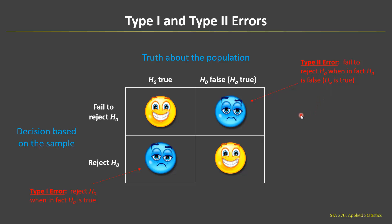So these are all the possibilities or possible outcomes that can happen in a hypothesis test. In two cases we make the correct decision, and in two cases we make an incorrect decision — one of them is a type 1 error and one is a type 2 error.